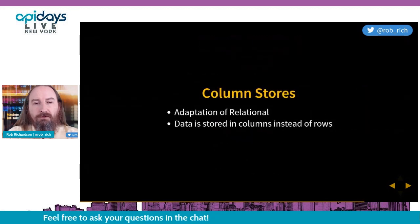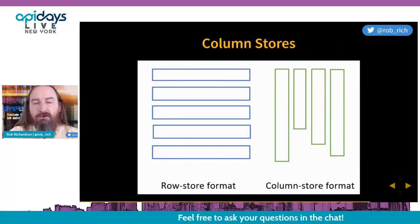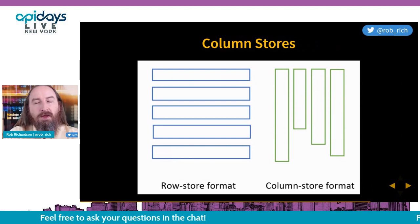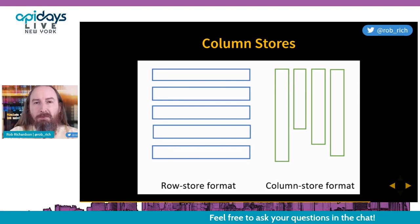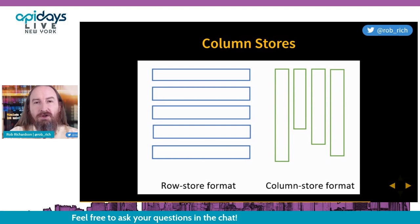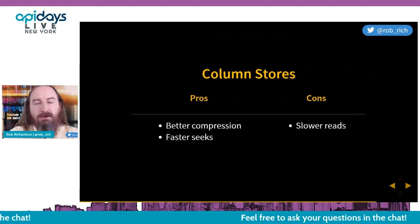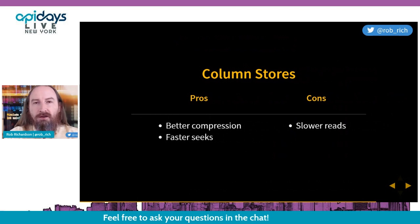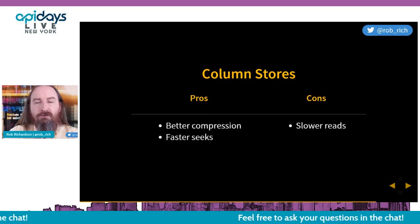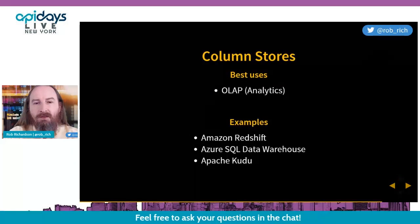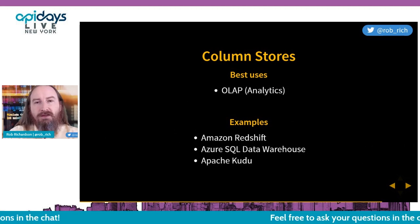Next, column stores. This is an adaptation of the relational model where data is stored in columns instead of rows. Imagine countries or states — we have a very limited set, so we can compress this data quickly and load a lot of data really fast. Column stores are great for analytical workloads where we can bulk-read content and bulk-seek, as opposed to transactional workloads. Column stores are not great at transactional processing — they're best for analytical workloads where you want to process data in bulk.